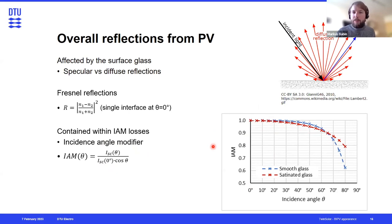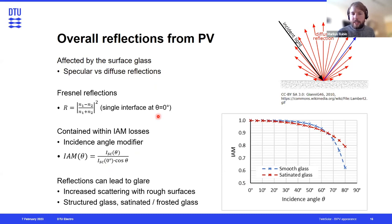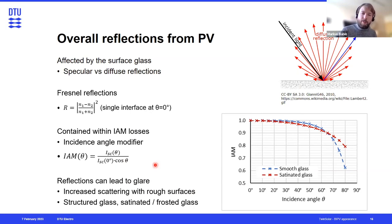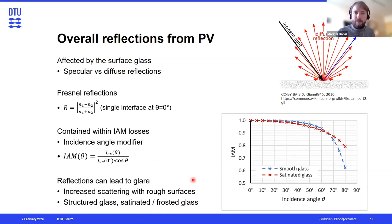So why is it important to consider these reflections? Basically, they can lead to glare — whenever we have specular reflections from a surface, they can cause annoying reflections. In order to avoid that, we can use rough surfaces to get more diffuse reflections. For that we have a lot of possibilities: structured glass (macrotextured glass), or satin or frosted glass, which is usually done with acid etching. My second presentation after the next break will deal mostly with glare.